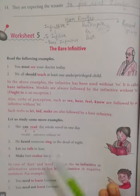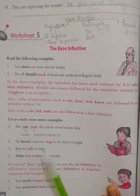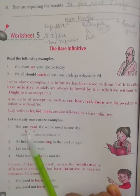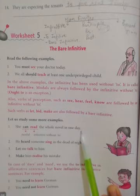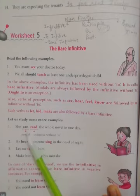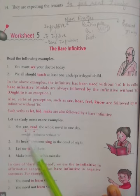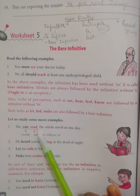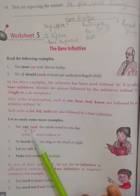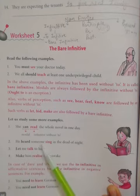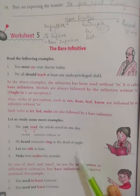Let's study some more examples. 'She can read the whole novel in one day.' The modal here is 'can' and the infinitive is 'read' — verb first form — used without 'to'. 'He heard someone sing in the dead of night.' Here 'heard' is a verb of perception, so we use 'sing' without 'to'.